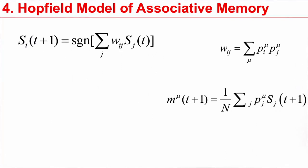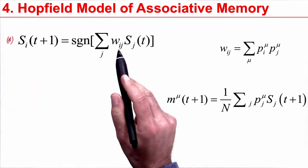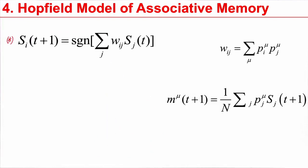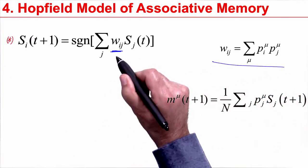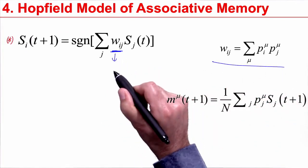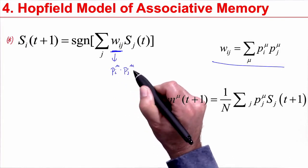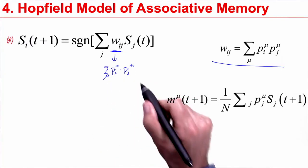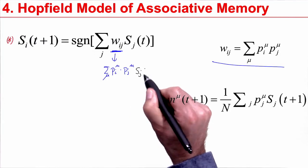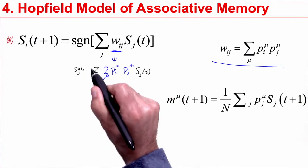Let's use what we have learned and try to understand the dynamics of the Hopfield model. This was our rule for the dynamics. And here I have the weights. What are the weights? The weights are given here. So I plug this in: pi mu, pj mu, sum over mu. That's the weights. Then I have my current state, sj of t. I copy the sum sign and I copy the sign.